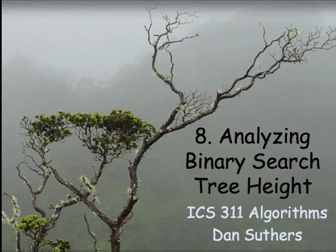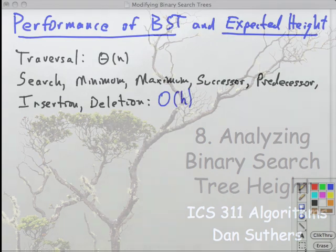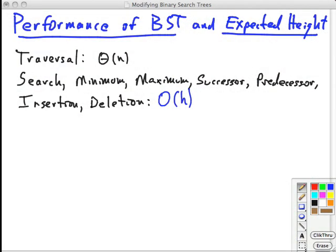Up to this point, we've analyzed most of our binary search tree algorithms in terms of h, the height of the tree, but we haven't determined what h is in terms of n, the number of input elements. In this screencast, we'll do that analysis and make some other comments on binary search trees. To recap, we've looked at a traversal procedure for traversing a binary search tree and found it to be theta of n.